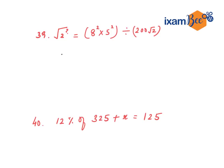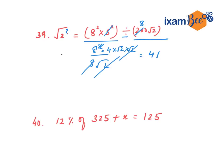Next question: we have to find 2 to the power x. We solve: 5 divided by 5 squared is 25, giving 8 root 2. Then 8² upon 8 root 2 simplifies to 8 upon root 2, which equals 4 root 2 into root 2. So 4 root 2 equals root 2 to the power x. Squaring both sides: 16×2 = 32 = 2 to the power x. So x equals 5.